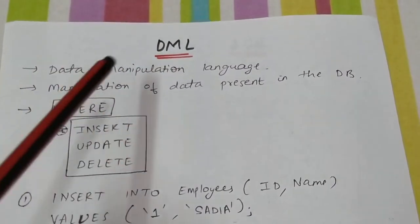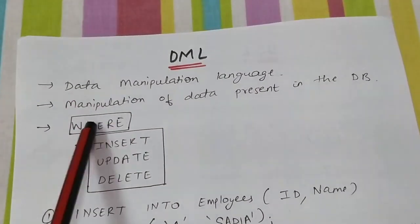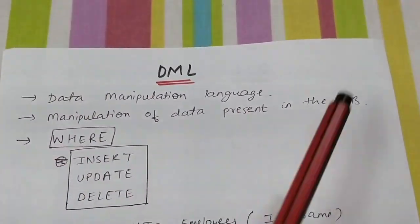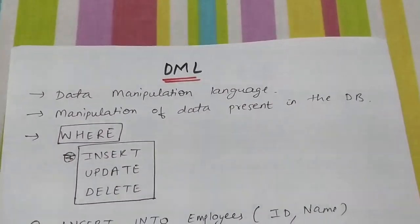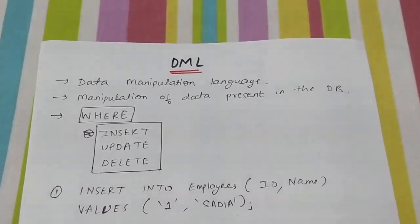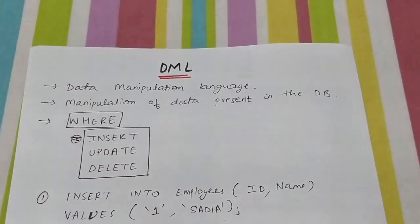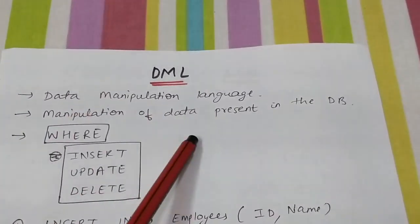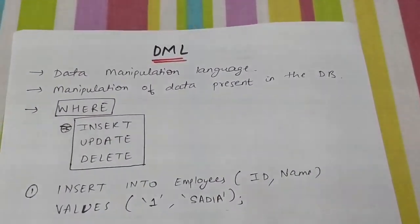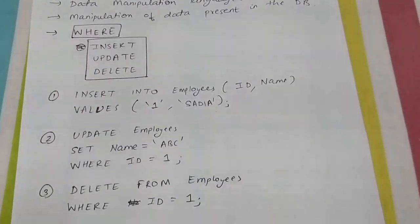DML stands for Data Manipulation Language. It is used to manipulate the data present in the database — the rows. We can update a value in a row, delete a row, or insert a new row. There are three DML commands: INSERT, UPDATE, and DELETE.